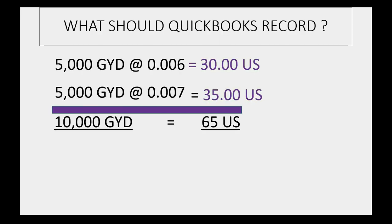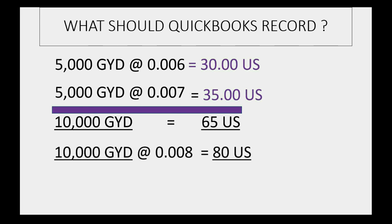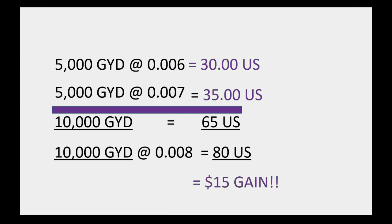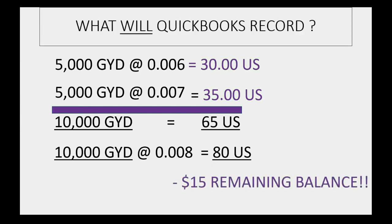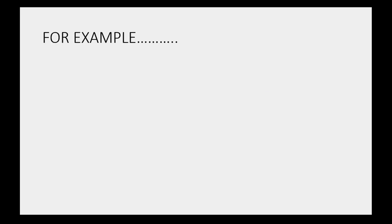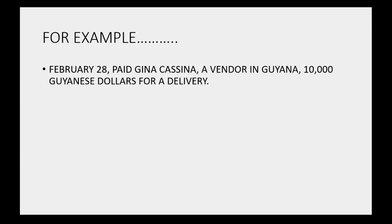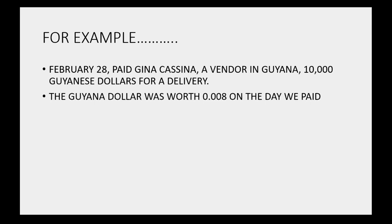What should QuickBooks record? It should record paying $80 for the expense, and you have a $15 gain at the moment you pay that expense. But instead of a $15 gain, it will put the bank balance as minus $15, even though you paid all of the Guyana dollars out of the bank account. For example, let's imagine on February 28 we paid Gina Casina, a vendor in Guyana, $10,000 Guyanese dollars for a delivery. The Guyana dollar was worth 0.008 on the day that we paid.